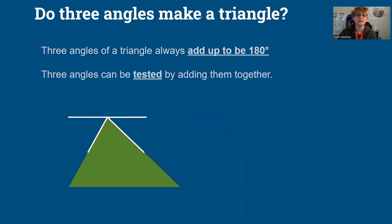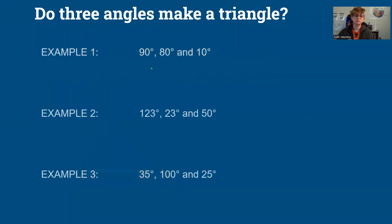So let's look at some examples. Do these make triangles? And so we're going to test this by adding. So 90 plus 80 plus 10. 9 plus 8 is 17, 17 plus 1 is 18. So yes, this adds up to be 180. So this is a triangle.